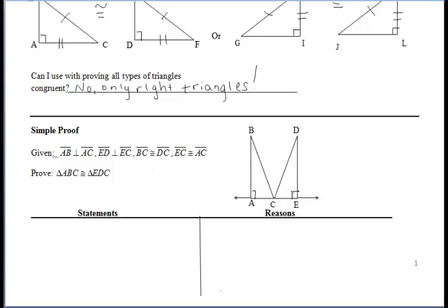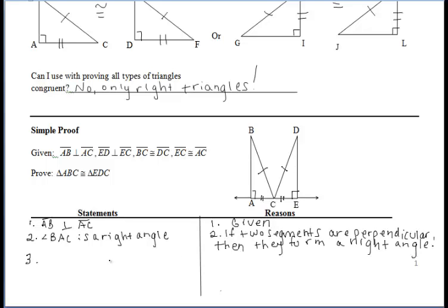Let's take a look at a simple proof. We're reading our given information and filling in the tick marks in our diagram. At this point, you should recognize those two triangles can be proved congruent using HL — we're not going to use SAS because the angle is not included between the two congruent sides. I'm writing down the first given with our perpendicular segments, and we can say that angle BAC is a right angle because if two segments are perpendicular, then they form a right angle. We can also mention the other perpendicular given information and therefore write our other right angle, angle DEC.